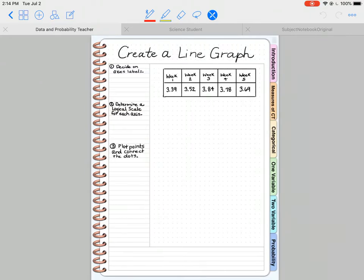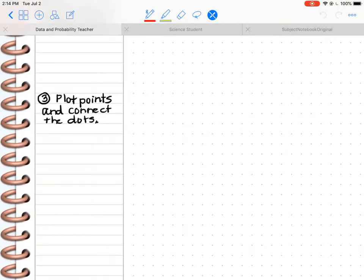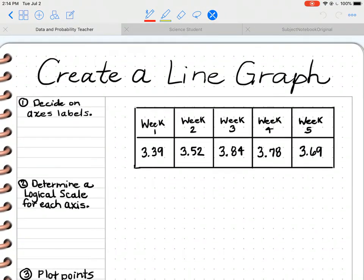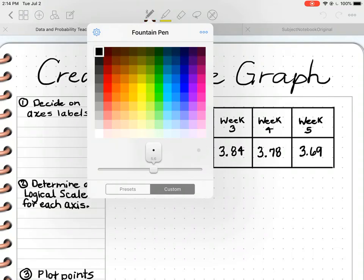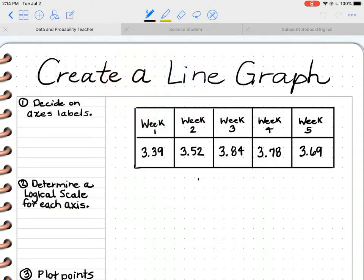We are going to create a line graph. I'm giving you some data. I should have given this data a title, because it makes absolutely no sense other than we know that we have five weeks and some decimal numbers. Let's give this one a title: gas prices for five weeks.